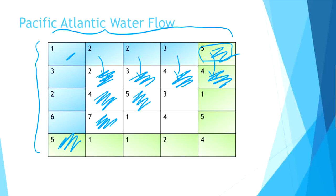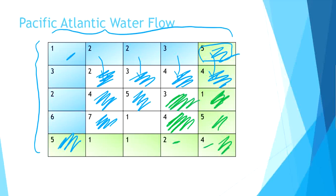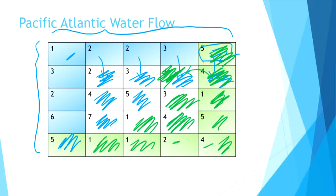Now let's fill the Atlantic Ocean water in green color. Starting from the bottom right cell 4 — this is already filled with Atlantic water. From 2 it can flow to 4, so color it green. From 4 it cannot flow to any other cell, it stops. But from 5 it can flow to 1, and from 1 it can flow to 3. From this one it can flow to 1, and this one is also green. Cell 4 is intersecting. From this 4 it can flow to the left neighbor cell, so that 4 cell is colored with both blue and green. From 3 it can flow to 5, so we color 5 with both blue and green.